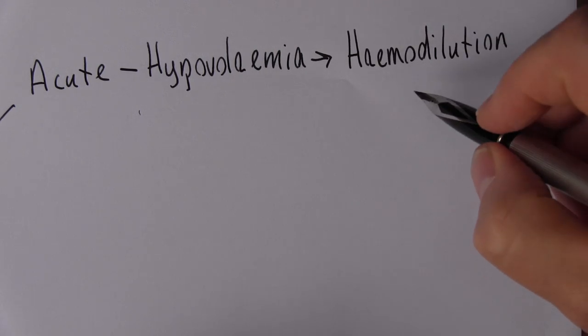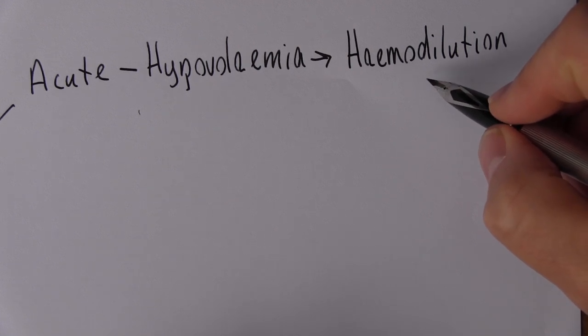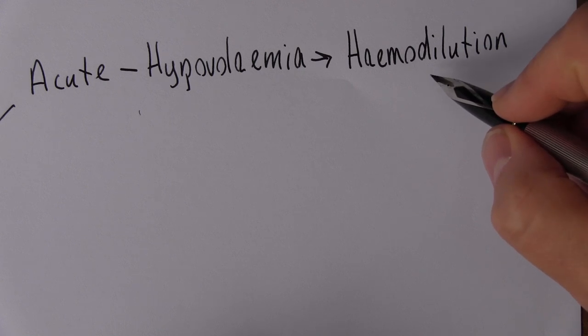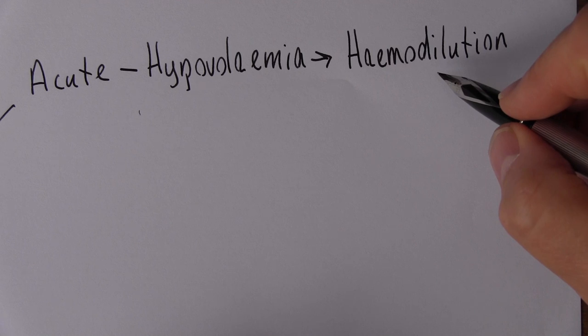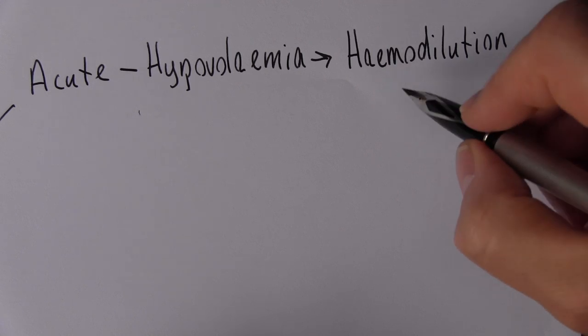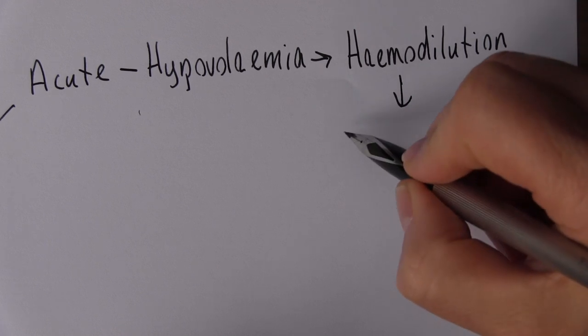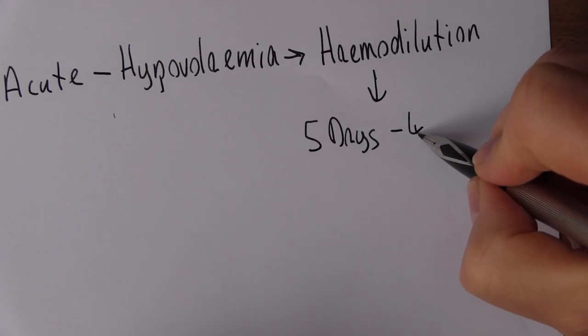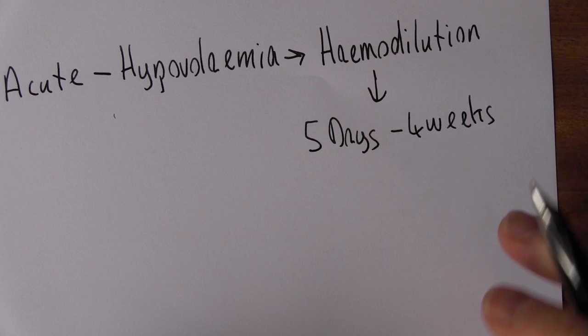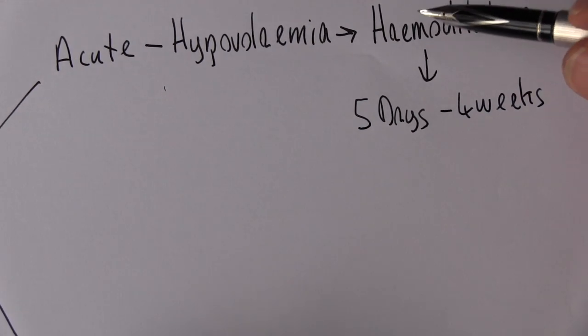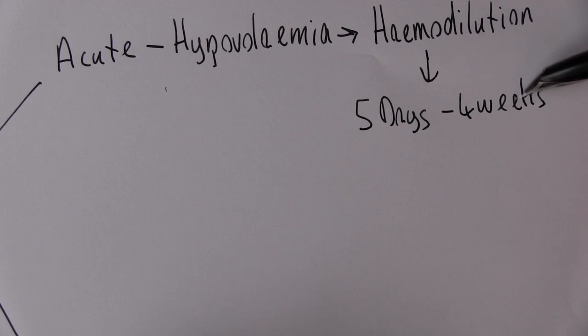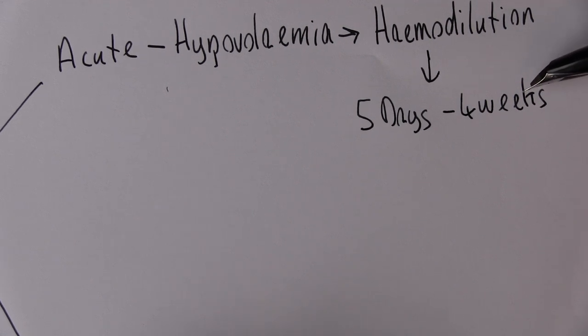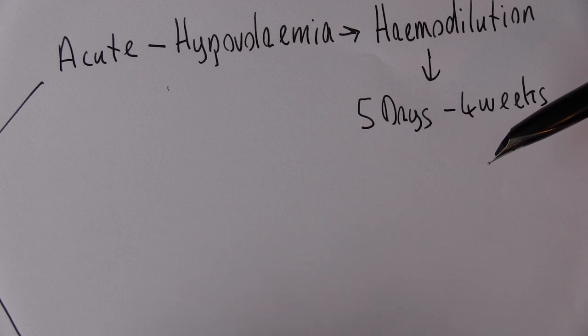And what happens is when the blood volumes, when the red cell volumes are low, that's going to reduce the amount of oxygen carried in the blood. That's going to be detected in the kidney, and the kidney is going to produce more erythropoietin which stimulates the red bone marrow. So starting after about five days to about four weeks, there's going to be increased red cell production. So after about four weeks, a lot of the red cells are going to be replaced, and significant numbers will start to be replaced after about five days and the patient will start to have more energy again.